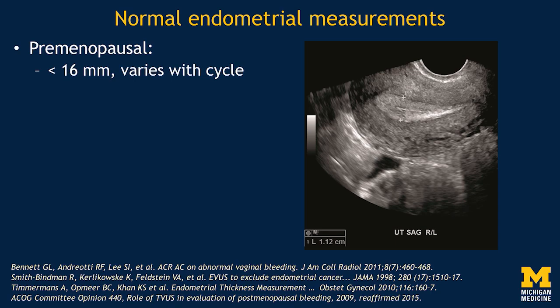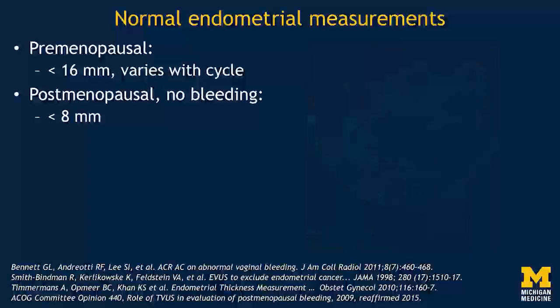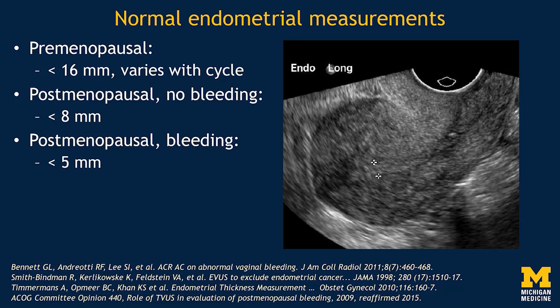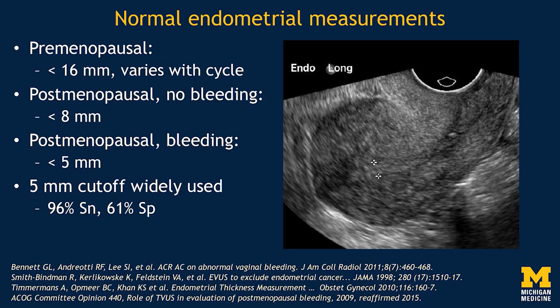In postmenopausal women with no bleeding, we usually use a threshold of less than eight millimeters. In postmenopausal women, the endometrium starts to look a lot less distinctive — it's thin and relatively similar in echogenicity to the myometrium. In women who are bleeding and who are postmenopausal, we use that five millimeter threshold. That cut point gives us about 96% sensitivity for detection of endometrial pathology, and that's considered a pretty effective way of catching the cancers without overtreating other women.